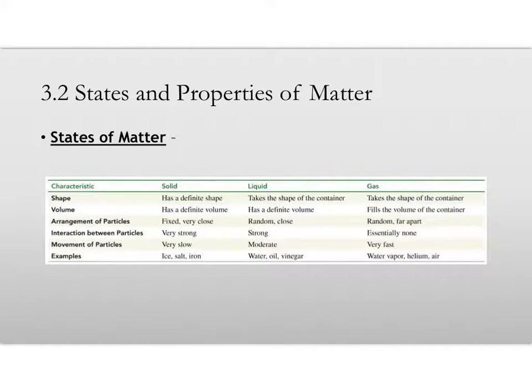As you can see on this table, we've got solids, liquids, and gases with shape, volume, arrangement of particles, interaction between particles, movement of particles, and then examples of each. You guys can look at that on your own time. It's in the book. I'm not going to go anymore because I've already kind of said it.